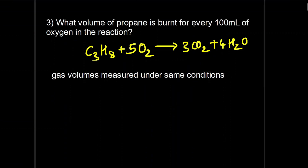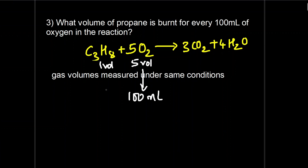Next problem: what volume of propane is burned for every 100 ml of oxygen? The balanced equation is already given. Gas volumes are measured under the same conditions. From the equation, 1 volume of propane requires 5 volumes of oxygen. So for 100 ml of oxygen: (1/5) × 100 = 20 ml of propane.